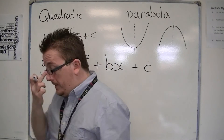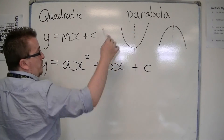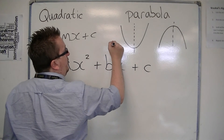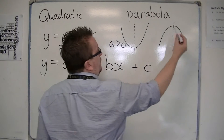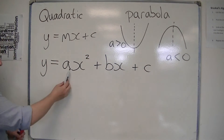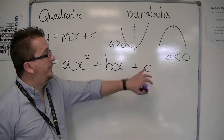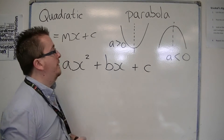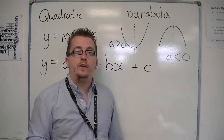You get the upward-opening curve when a is positive, and you get the downward-opening curve when a is negative. So depending on that value of a — the coefficient of x-squared — that determines which way around the curve would be.